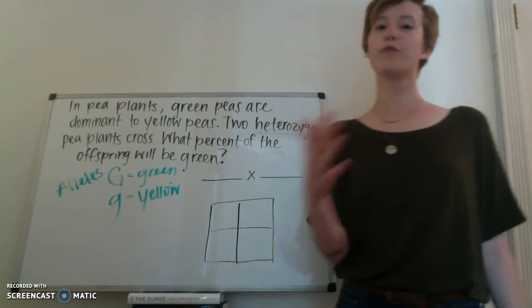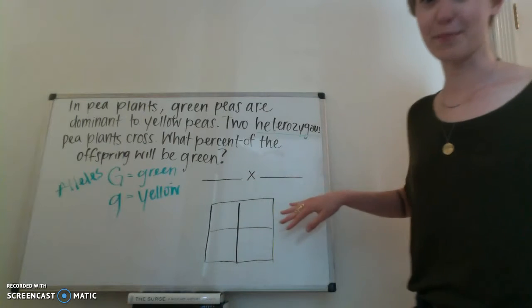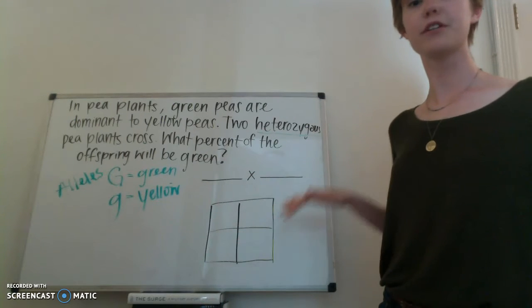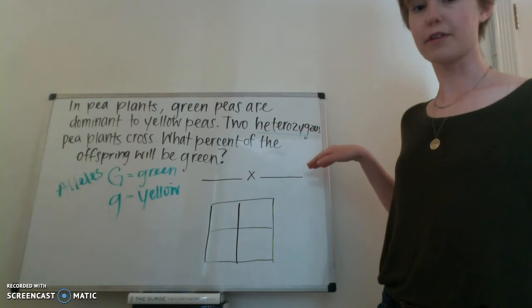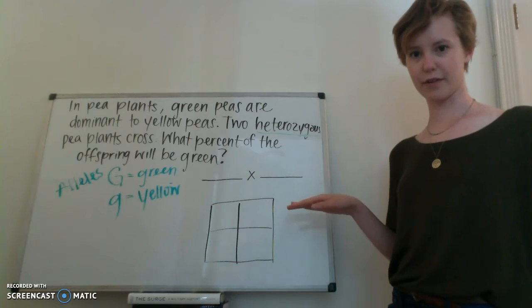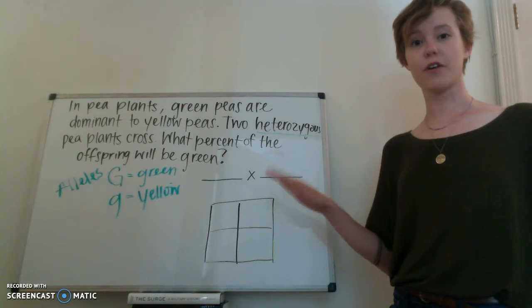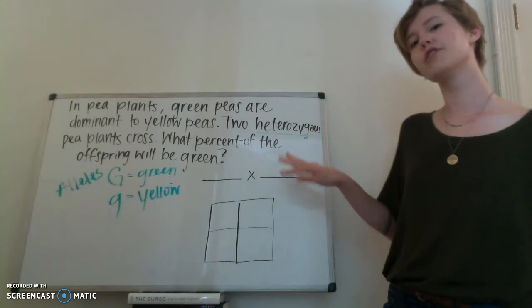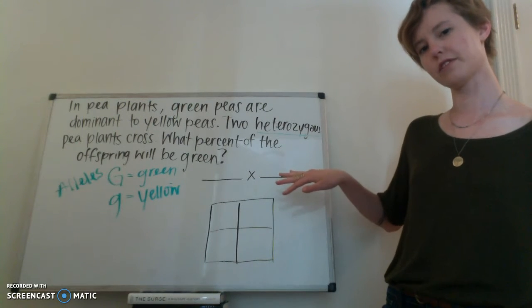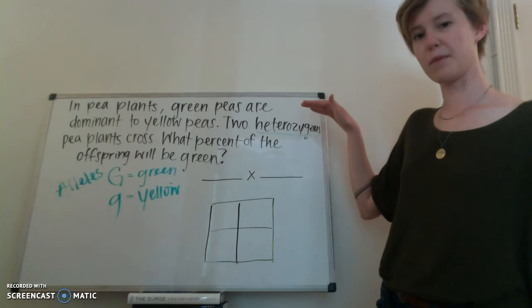And so to do that, we will be using our dear friend, the Punnett Square. So, as you can see, I've added a couple things to our board. I'll talk about this part here in a second, but this is our good friend, the Punnett Square. So in this video, I'll explain how we can use our Punnett Square, who by the way, is your new best friend, to solve this problem up here.